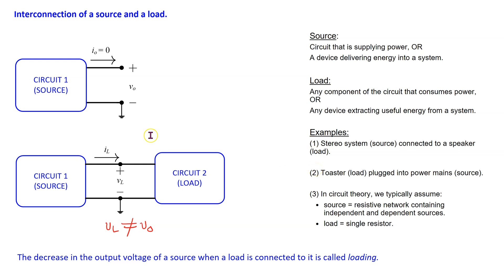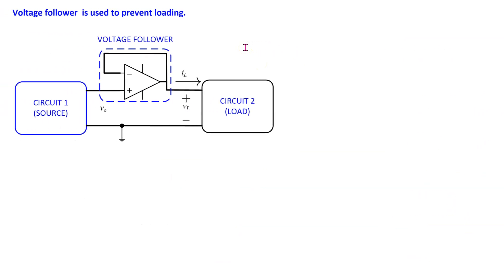Consider a source circuit which is designed to produce some output voltage V_naught when no load is connected to it. In this case the source does not have to supply any current to the load. When a load is connected, the source circuit now has to supply some load current I_L. This changes the output voltage produced by the source, which is now V_L, and V_L is not equal to V_naught. The change or decrease in the output voltage of a source when a load is connected to it is called loading.